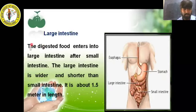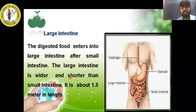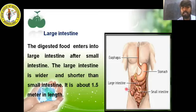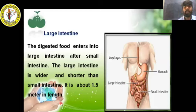After the small intestine, digested food enters the large intestine, which is wider and shorter than the small intestine - about 1.5 meters in length. After complete absorption of nutrients in the small intestine, the remaining waste is sent to the large intestine and excreted through the anus.